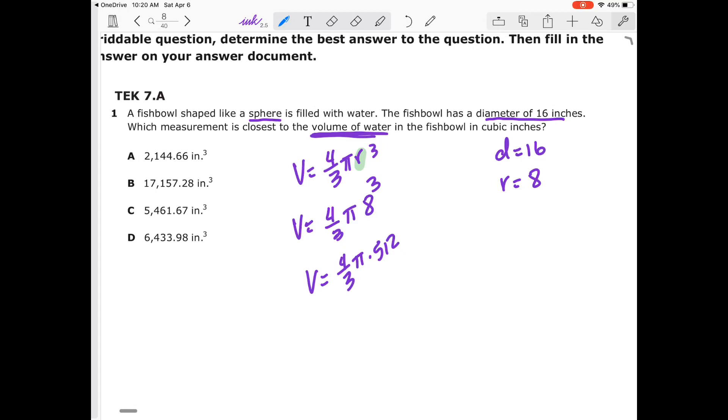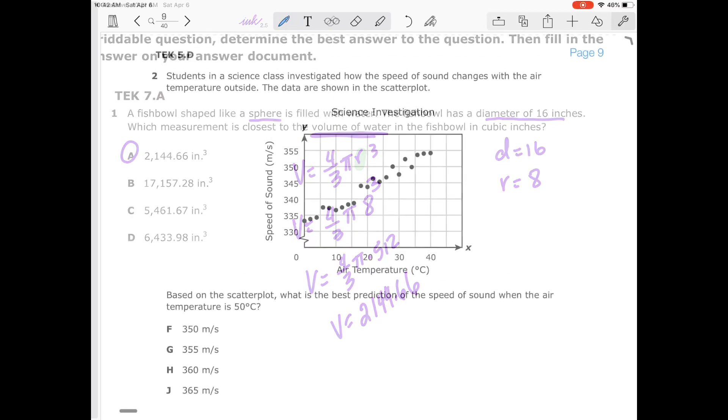I can take 512 times 4, which will give me 2048, and I can divide that by 3, which will give me 682.66, and then I can multiply that by pi, and that will give me volume equal to 2,144.66, which is our answer choice A. Quite simple, easy, quick, and we are done with question number one.